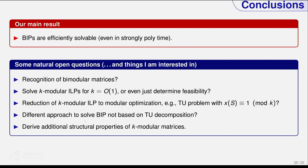It would be nice to have a different approach for solving BIPs not based on Seymour's TU decomposition. In other work with Alfonso Cervales and Stefan Weltke, we show that BIP cones — specifically the integer hull of a BIP cone — can have very high extension complexity. Even allowing up to almost square-root-log-n many integer variables in an extended description, you still cannot describe it with a small number of constraints. So finding a small description via parity-based integer variables will not work. Additional structural properties of K-modular matrices remain open.